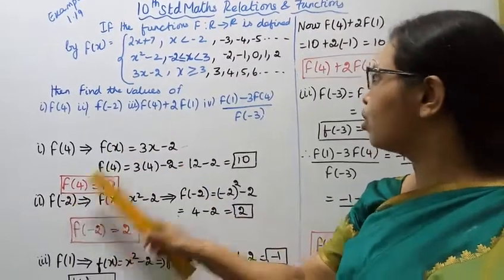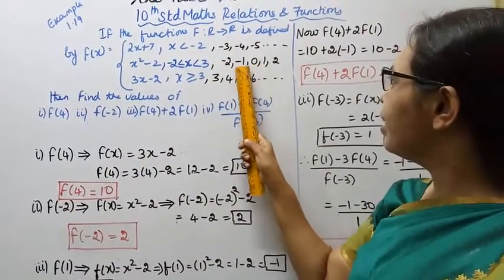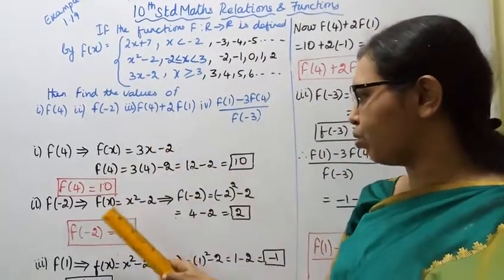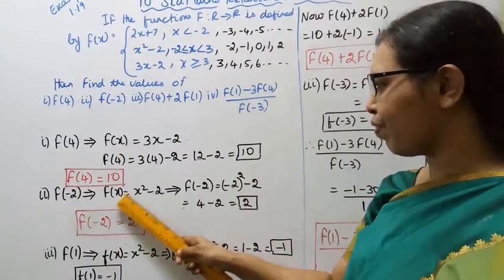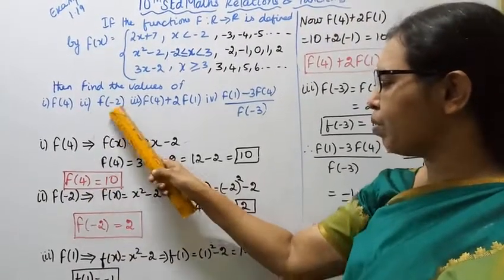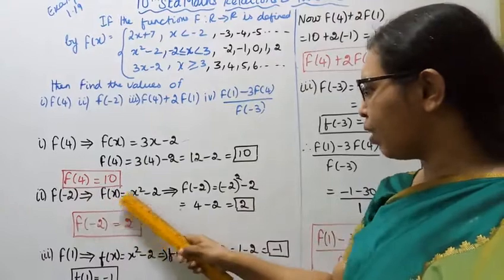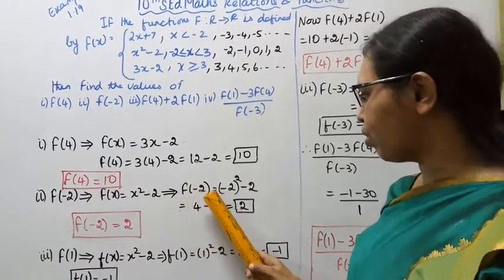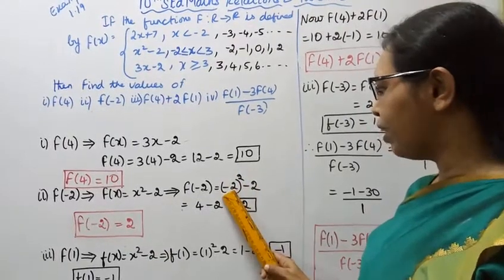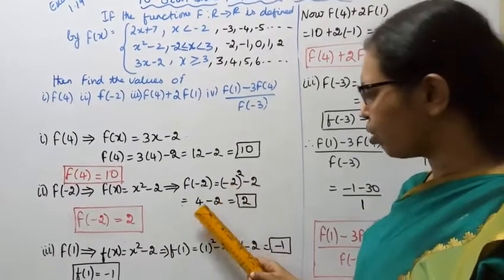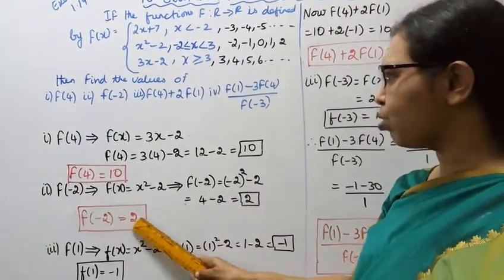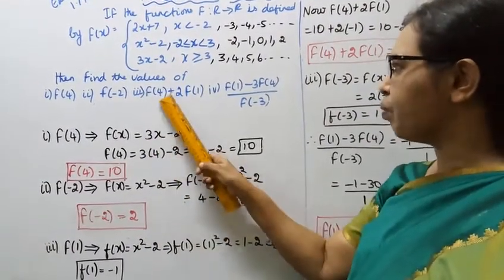f(minus 2). For minus 2, f(x) equals x square minus 2. So f(minus 2) equals minus 2 the whole square minus 2, which is 4 minus 2 equals 2. So f(minus 2) equals 2. Third subdivision: